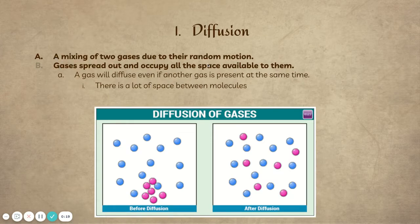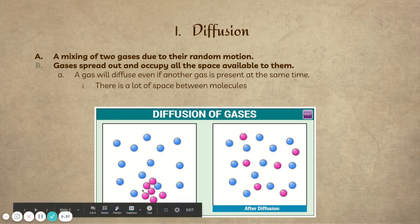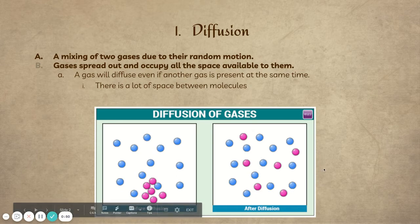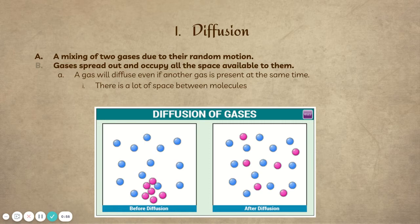Diffusion is mixing two gases, and the gases spread out to occupy all of the space available to them. When you hear the word diffusing, you can think of spreading out as much as possible. In this picture, we have clustered pink molecules before diffusion, and then after diffusion, those pink molecules are now evenly spread out throughout the substance, filling the entire container. Gas molecules spread out as far as possible.